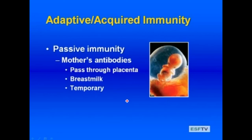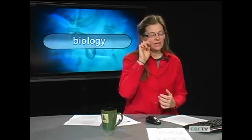Passive immunity is a vertical transmission from a mother to an offspring. When a placental organism is born, it has its mother's antibodies present, which helps defend them from early invaders until their own immune system develops and matures. These antibodies can pass through the placenta and can also be ingested through breast milk. However, this is a temporary immune response that will degrade over time as those antibodies are broken down.